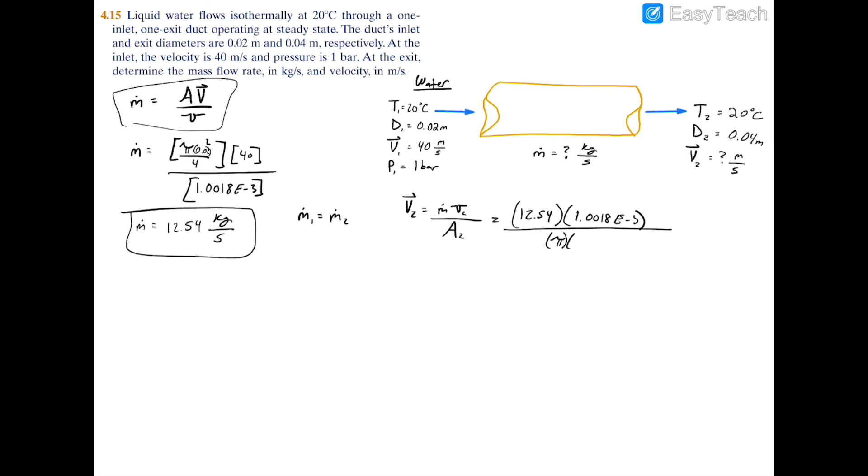In this case we have pi again, d squared over 4, but the d in this case is going to equal 0.04, 0.04 squared, and we're going to divide this whole thing by 4.